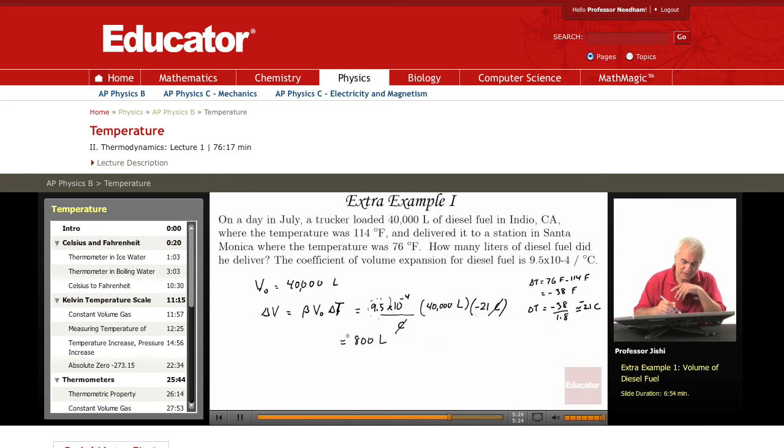So the minus sign, delta V is minus 800 liters. So what happens is the fuel had a volume of 40,000 liters at the high temperature. When it was moved to a lower temperature region, the volume decreased by 800 liters.